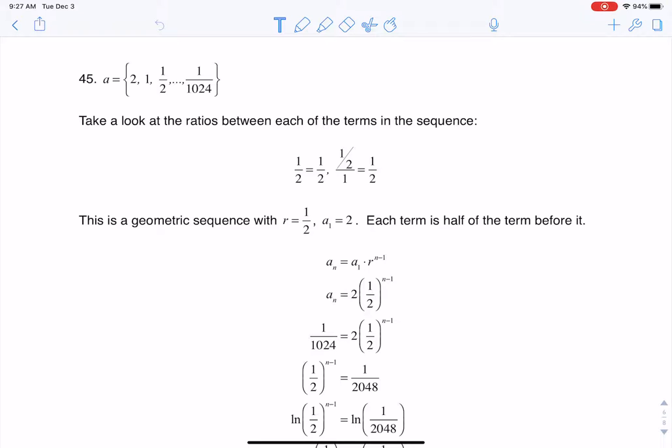Hey Math31, I had a question coming out of section 9.3, number 45. This is where they gave us some terms in a geometric sequence. They specifically told us it was geometric, and they just said, how many terms is this?